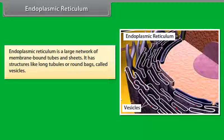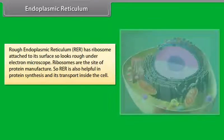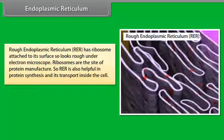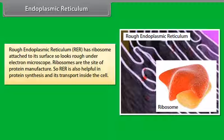Rough Endoplasmic Reticulum, RER, and Smooth Endoplasmic Reticulum, SER. Rough Endoplasmic Reticulum has ribosomes attached to its surface, so it looks rough under the electron microscope. Ribosomes are the site of protein manufacture, so RER is also helpful in protein synthesis and its transport inside the cell.